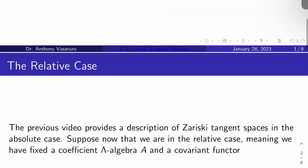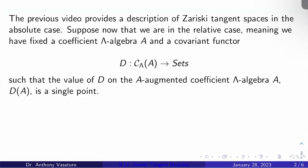All right. So again, the previous video describes the Zariski tangent space in the absolute case, the case when we're working over a base field k. Suppose now that we're in the relative case, meaning we have a fixed coefficient Λ-algebra A, which isn't necessarily k.